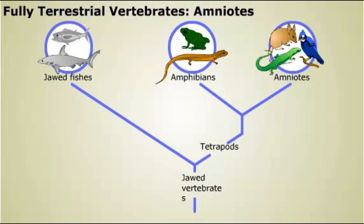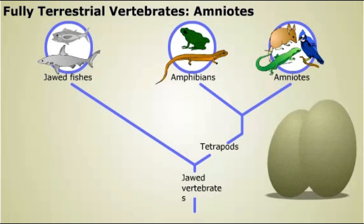The first fully terrestrial vertebrates evolved from ancient amphibians. Today, we would probably consider these animals reptiles. They had tough, waterproof skin and laid eggs with shells that retained water on land. The descendants of these first reptiles are a monophyletic group, including all living reptiles, birds, and mammals. These animals are called amniotes.